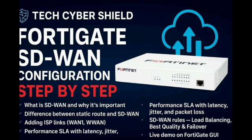In a traditional setup, if you have multiple internet connections like WAN1 and WAN2, you usually create separate static routes and firewall policies for each ISP. The problem with that setup is if one ISP goes down or becomes slow, traffic doesn't automatically shift to the other link. That's where SD-WAN comes in — SD-WAN intelligently manages multiple WAN connections by continuously monitoring link quality like latency, jitter, and packet loss.